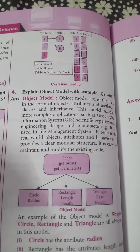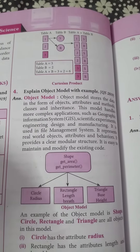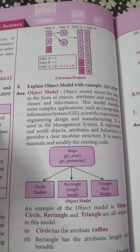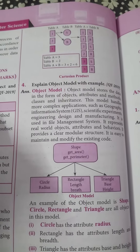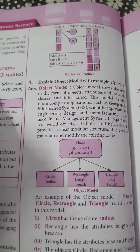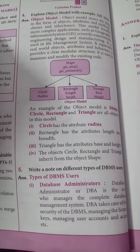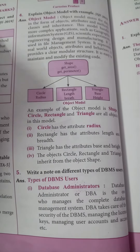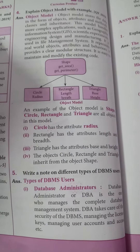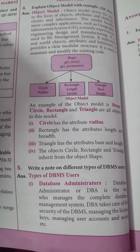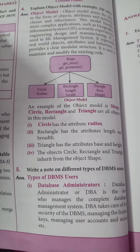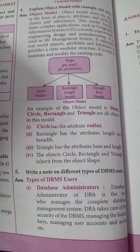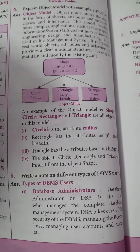Fourth one: explain the object model with an example. Fifth one: write a note on the different types of DBMS users. These are the 3-mark questions.